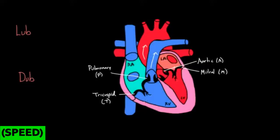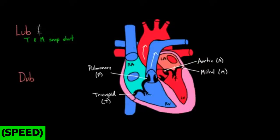When the valve snaps shut — specifically when the tricuspid valve and the mitral valve snap shut — that makes a noise. When T and M snap shut, that makes a noise we call lub. That's the first heart sound. Sometimes people don't call it lub-dub; they say it's the first heart sound, or S1. So if you hear S1, you know they're talking about that same thing.